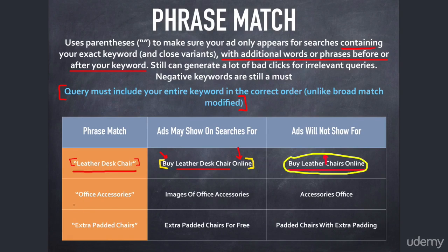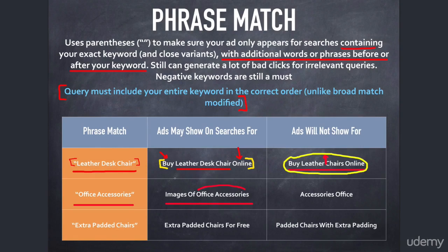Another example: "office accessories" — that's my phrase match keyword. "Images of office accessories" is eligible because "office accessories" appears in the query in the correct order, with "images of" prepended. That's another example of a query that might trigger my ads, though we want to be careful. My ads will not show for "accessories office" — the words are reversed.